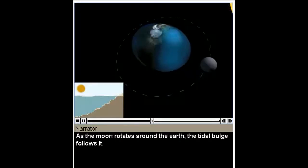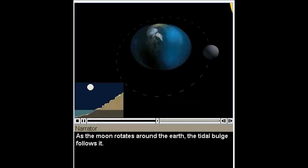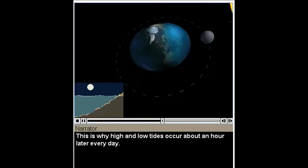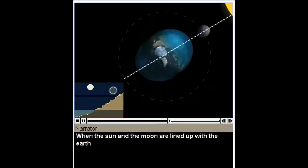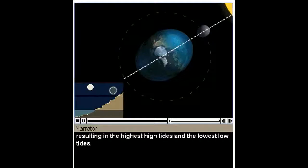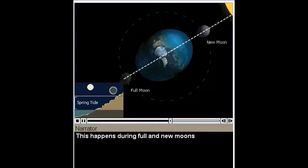As the Moon rotates around the Earth, the tidal bulge follows it. This is why high and low tides occur about an hour later every day. When the Sun and the Moon are lined up with the Earth, their combined pull on the Earth's oceans is at its greatest, resulting in the highest high tides and the lowest low tides. This happens during full and new moons, and even though it occurs year-round, it is called a spring tide.